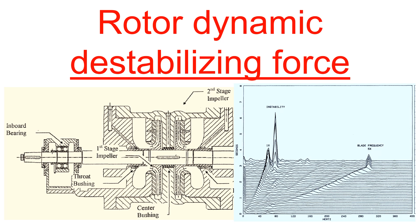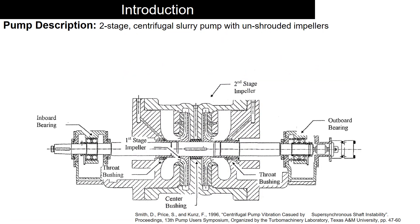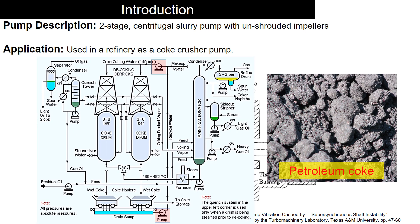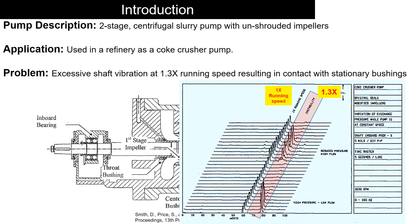Today I'll be discussing the destabilizing forces and their impact on rotor dynamics. Let's take a look at a two-stage centrifugal slurry pump. This pump is used in a refinery as a coke crusher, and it experienced large 1.3x vibration causing the shaft to rub against the stationary bushings.